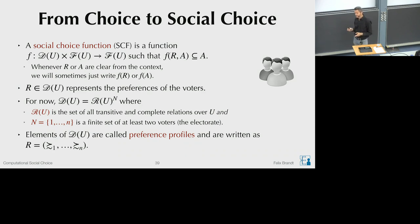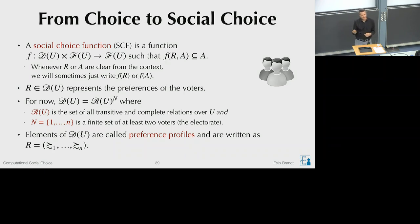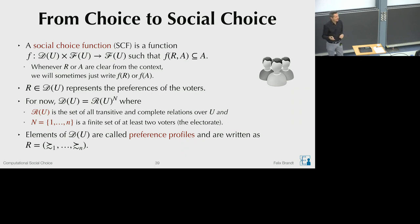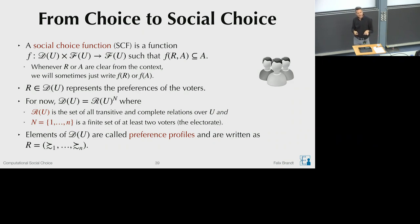As a notational convention: R always denotes a preference profile, R′ also always denotes a preference profile, A always denotes a feasible set, and B also always denotes a feasible set. This avoids writing out these definitions every time in definitions, keeping things concise.